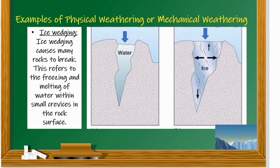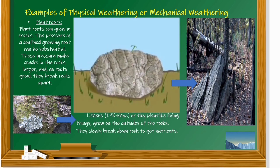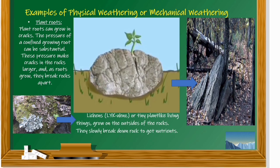Another example is ice wedging. Ice wedging causes many rocks to break. This refers to the freezing and melting of water within small crevices in the rock surface. Next is plant roots. Plant roots can grow in cracks, and the pressure of a confined growing root can be substantial. This pressure makes cracks in the rocks larger, and as roots grow, they break rocks apart. Lichens, or tiny plant-like living things, grow on the outsides of rocks and slowly break them down to get nutrients.